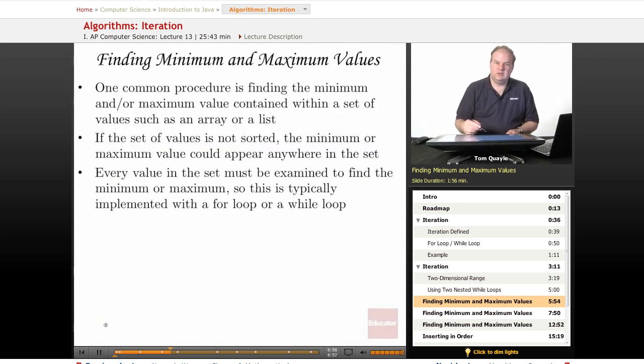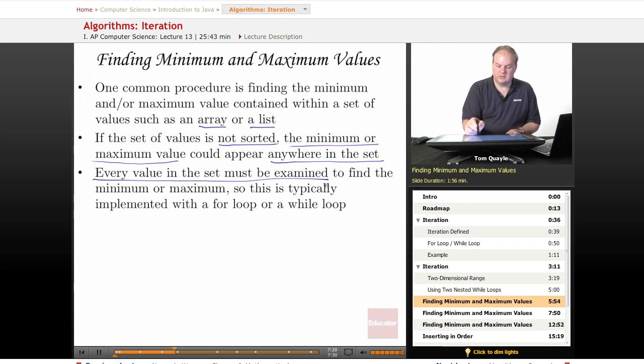Another common iterative algorithm is finding the minimum and maximum values contained within a set of values, and this could be an array or a list. If the set of values is not sorted, then the minimum or maximum value could appear anywhere in the collection. Therefore, we need to examine every value in the set to find the minimum or maximum since we don't know where it can be. This is typically implemented with either a for loop or a while loop, which are our two most common types of iterations.